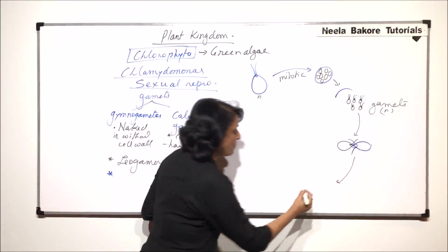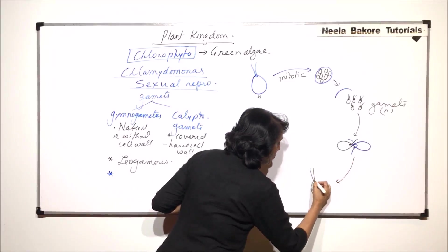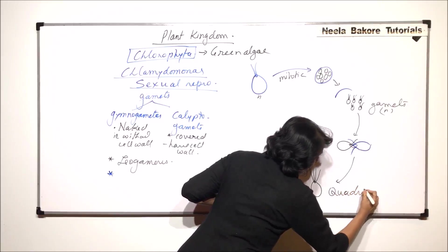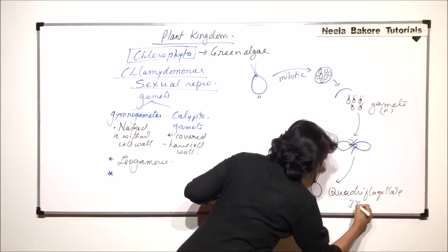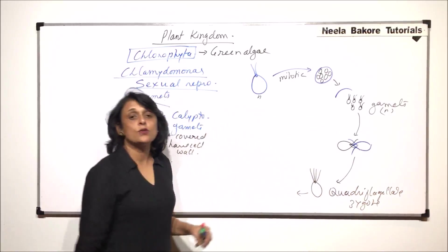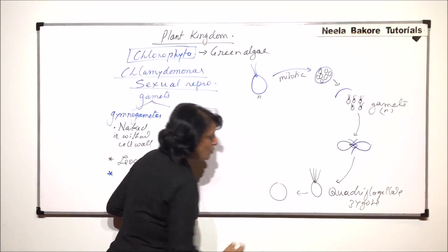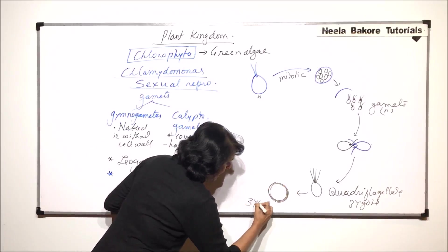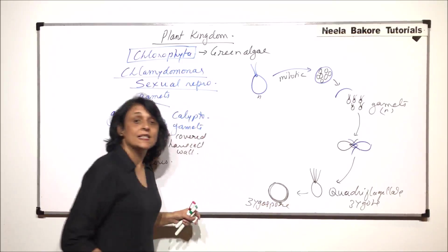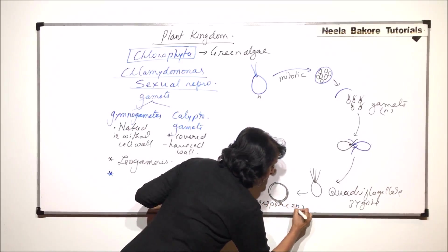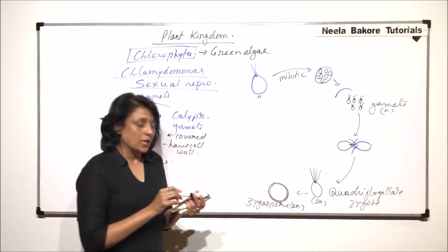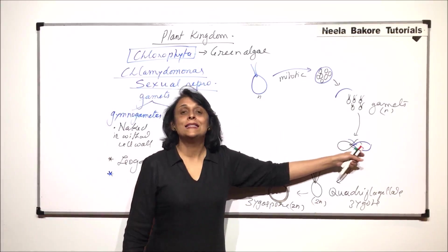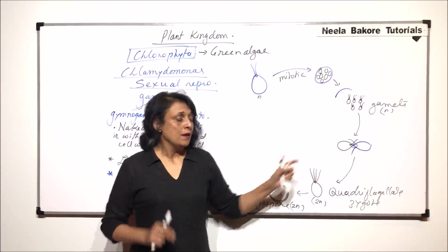Then, this results into formation of a zygote which is quadriflagellate. This is a quadriflagellate zygote and now this zygote is going to lose its flagella. Once it loses its flagella and it becomes thick-walled, then we start calling it zygospore and this zygospore is diploid. This zygote is also diploid. After fertilization by isogamous fertilization, because these two are exactly identical, that means morphologically and physiologically.